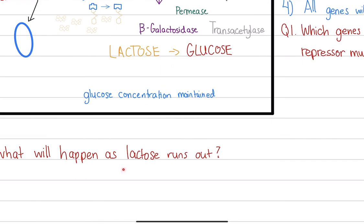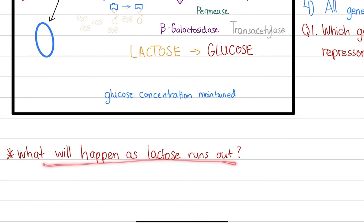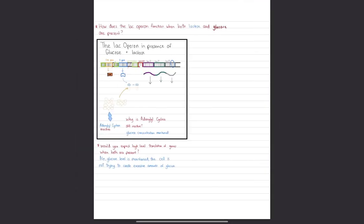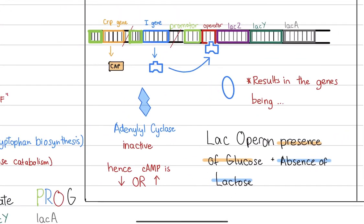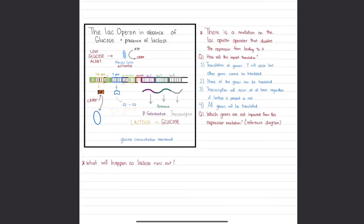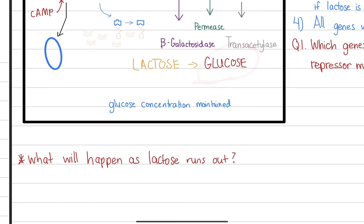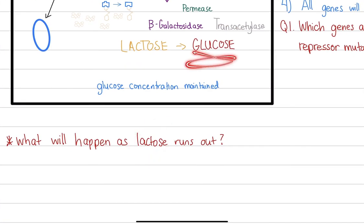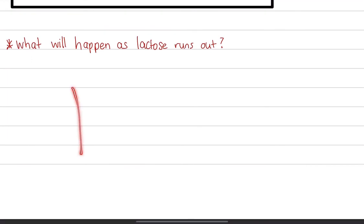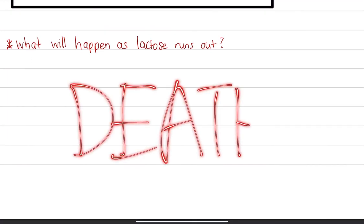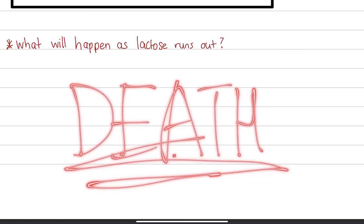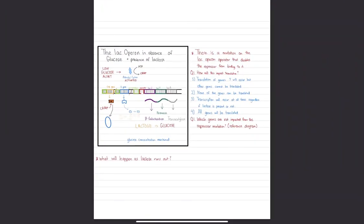When lactose runs out, the system returns to the first diagram. If lactose runs out and the cell also has no glucose, that's death — you don't want that. Thank you for watching this video, please hit the subscribe button, and hopefully you benefit from this video.